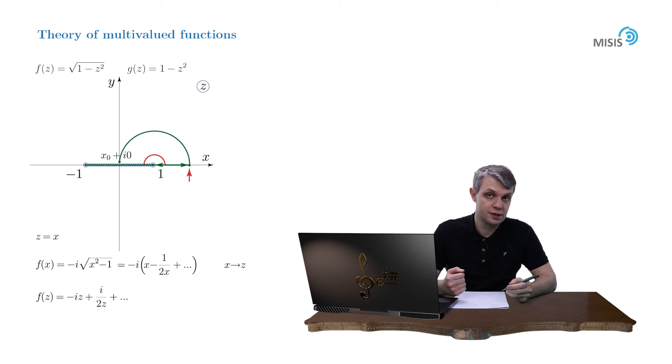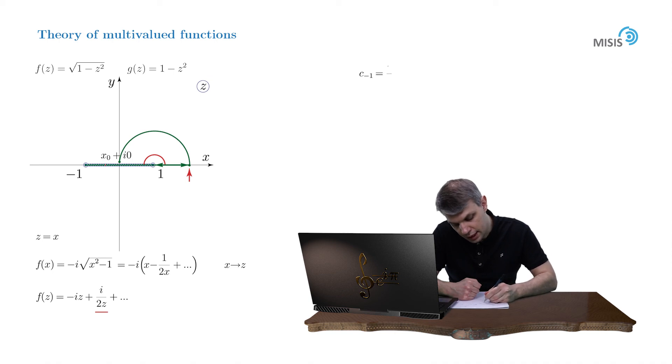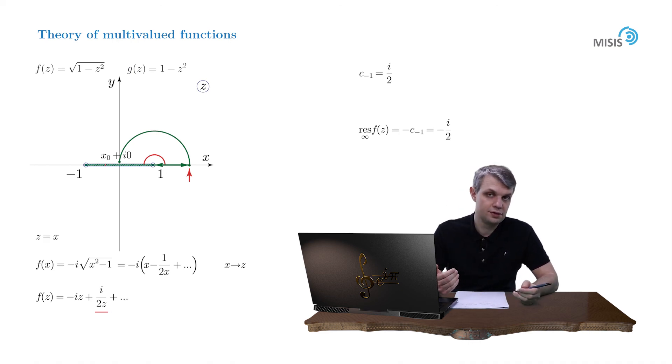And here is our coefficient c negative 1, which is equal to i over 2. And as you remember, the residue at infinity is precisely minus c minus 1. And this is our final answer for the residue of our f function.